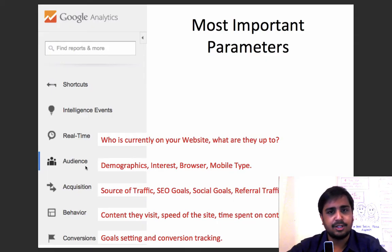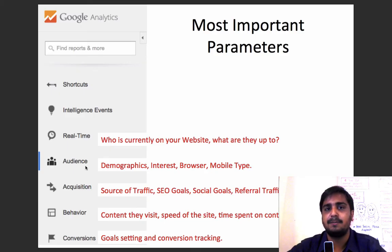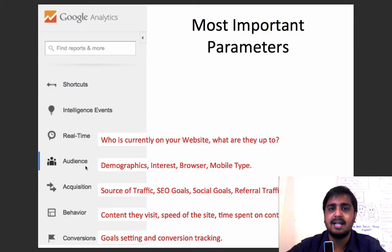Fifth is about conversions — goal setting and conversion tracking is something you can set using the conversions parameter. You can track conversions in terms of a person who visits your blog, fills out a form, and visits a specific thank you page. This gives you clarity on how many people visited your site and how many got converted in terms of leads.